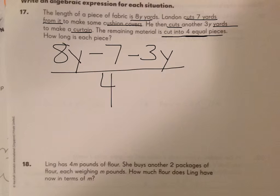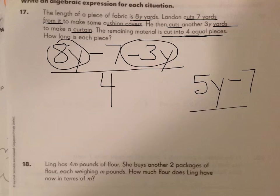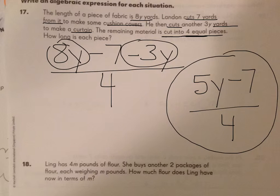So it's 8Y minus 7 minus 3Y divided by 4. Now I can simplify this because I have 8Y and 3Y. I have a positive 8Y and negative 3Y. So 8Y minus 3Y is 5Y minus 7 divided by 4. And here is my algebraic expression in simplest form.